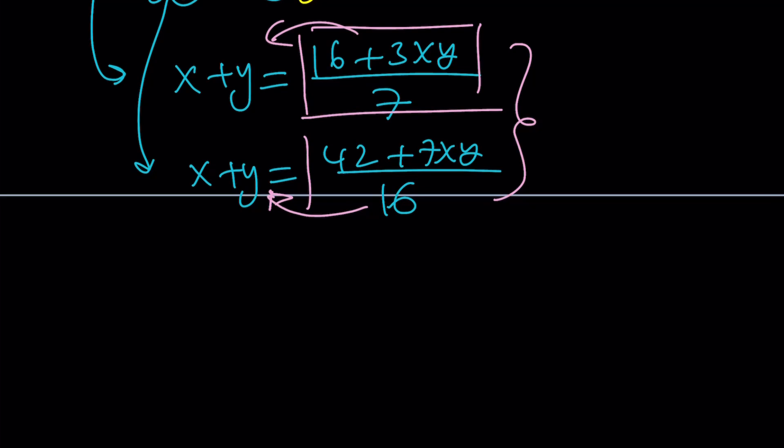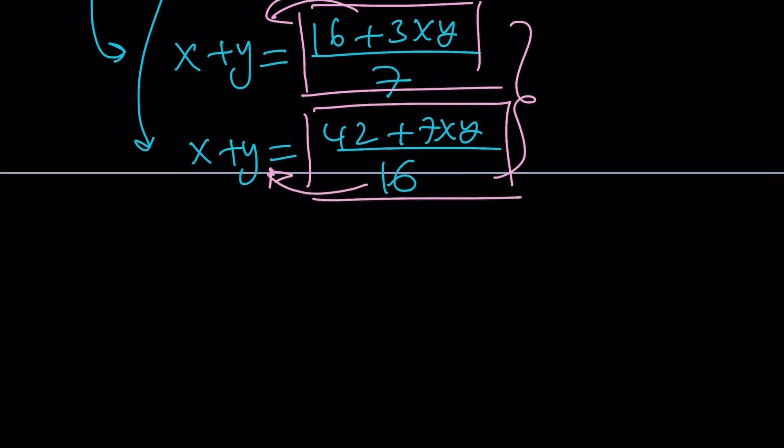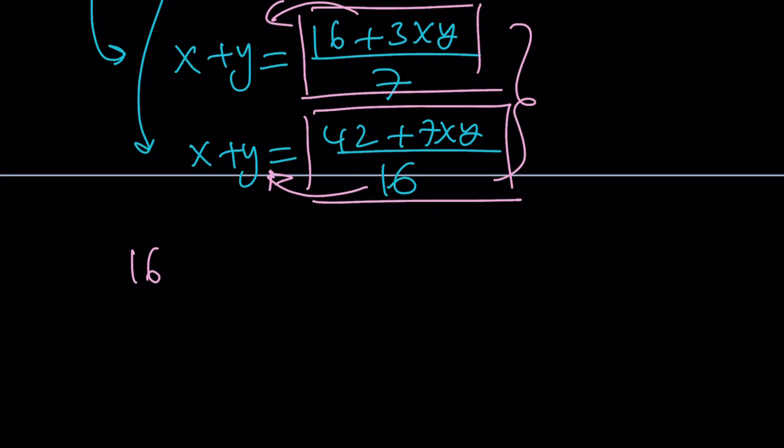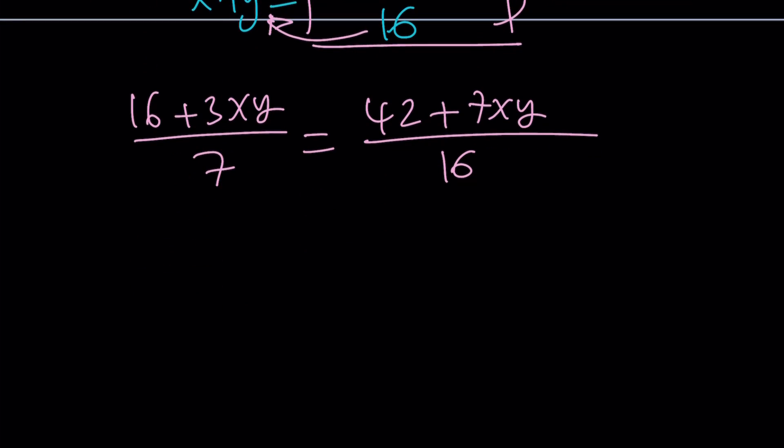Make sense? So, this equals this. Awesome. Let's go ahead and write it down. We can go ahead and write it as 16 plus 3xy over 7 equals 42 plus 7xy over 16. Now, if you do cross multiplication, you're going to get something like this. 256 plus 48xy equals 294 that's 7 times 42 plus 49xy.